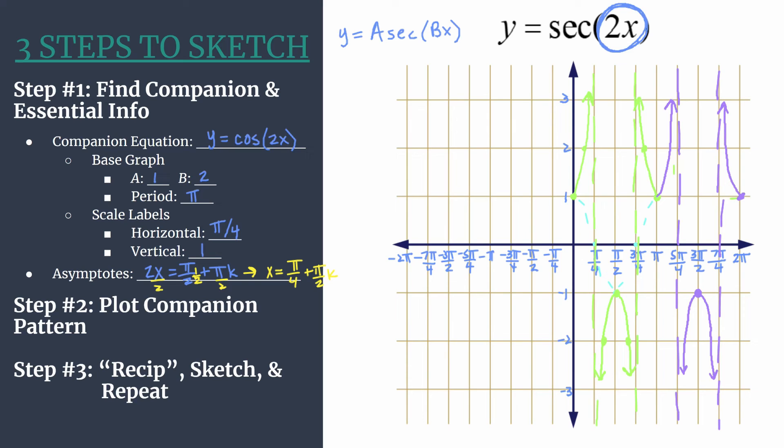And then we have this here. We can do some cycles in the negative direction as well. So I'll go ahead and put the asymptote here, negative π over 4. And sketch the secant curve up.